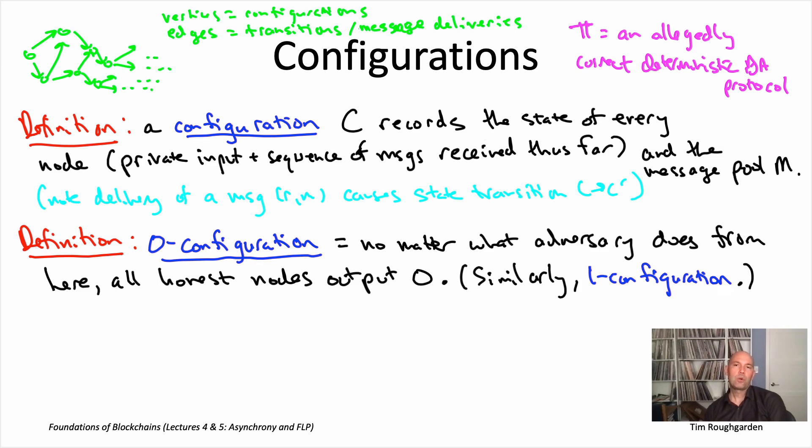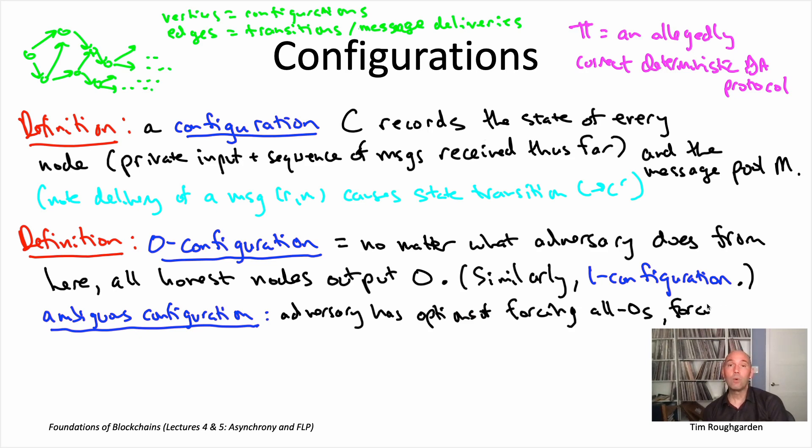The remaining configurations we're going to call ambiguous configurations. Here, by virtue of not being a zero configuration, there exists an adversary strategy that causes all the honest nodes to output one. By virtue of not being a one configuration, there exists an adversary strategy that forces all of the honest nodes to output zero. That is, the adversary can force either all zeros or all ones - it can choose the final output of the honest nodes.